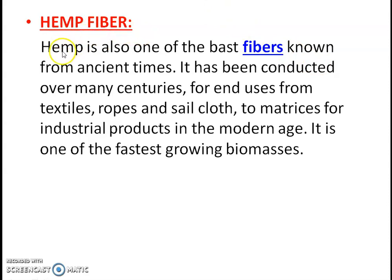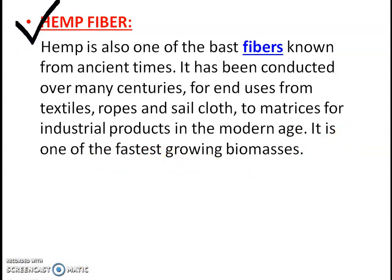Now we will talk about hemp fiber. Hemp is also a bast fiber known from ancient times. It has been used over many centuries for textiles, rope, sail cloth, and matrices for industrial products. In the modern age it is one of the fastest growing biomasses. Hemp fiber, or industrial hemp, is obtained from the outer layer or bast of the cannabis plant. Hemp fibers are separated from the bark through a process called retting.